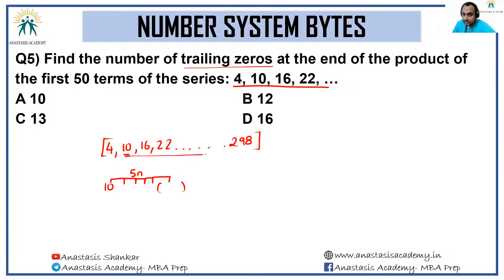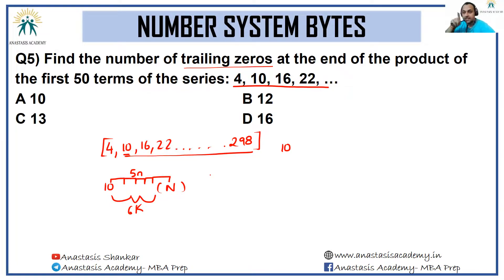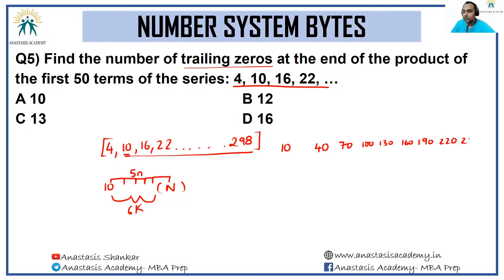So the next such number after 10 is 40, then 70, 100, 130, 160, 190, 220, 250, 280. These are all numbers in our series up to 298 that contain a factor of 5.